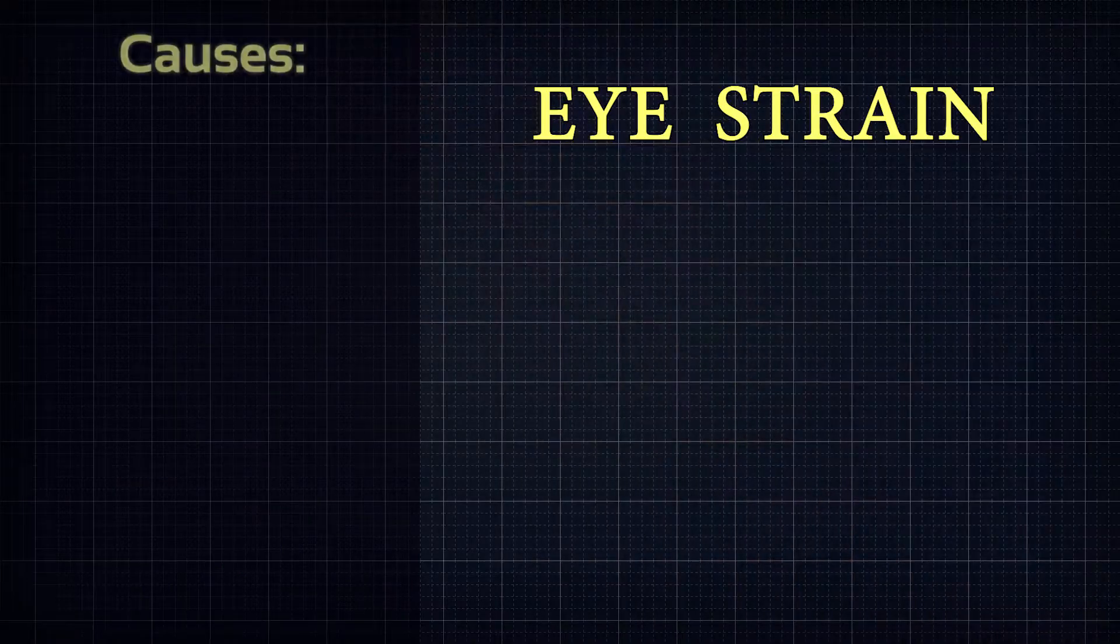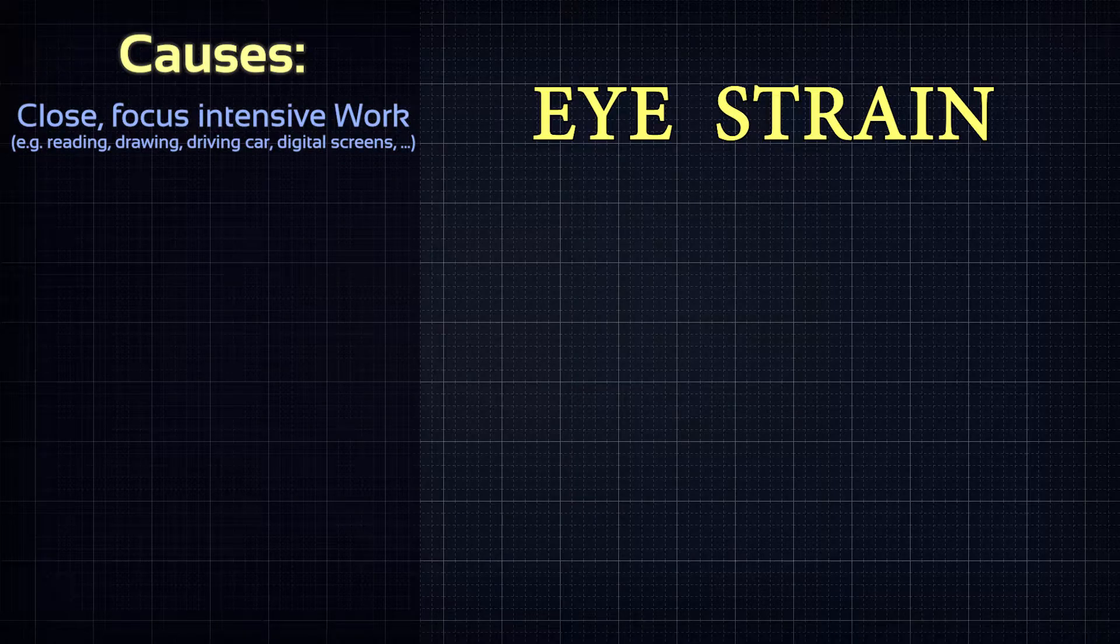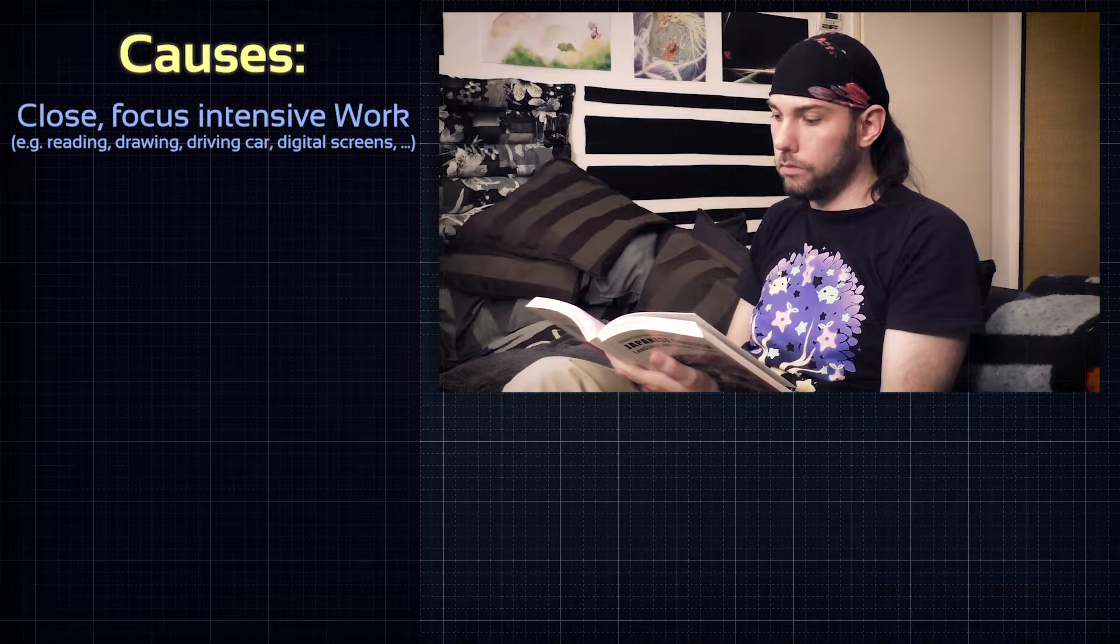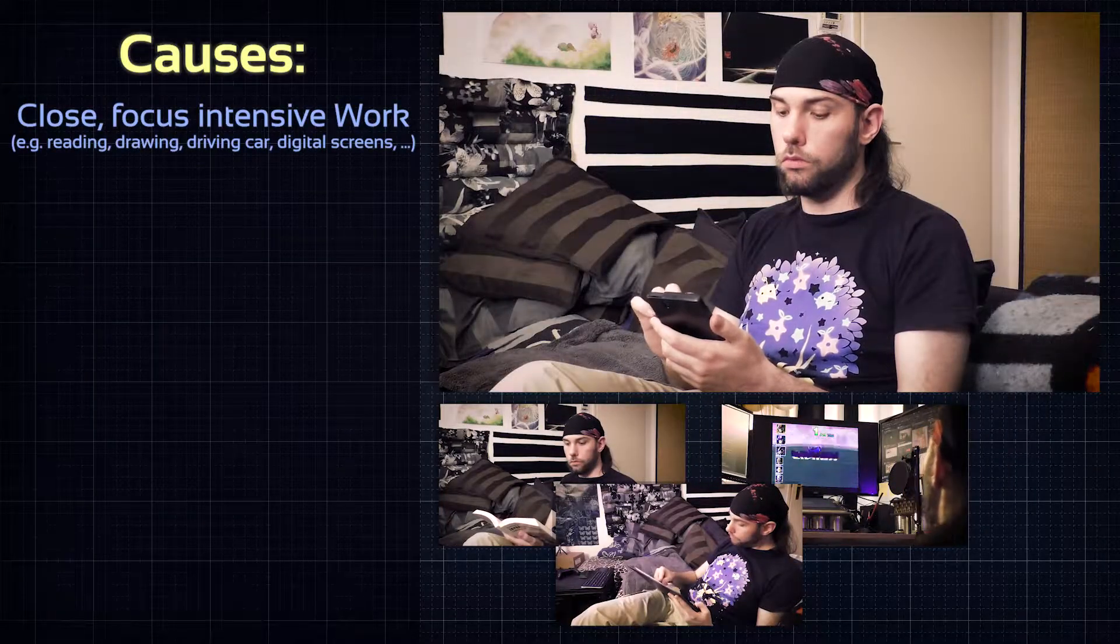Let's talk about the causes first. One of the main reasons for developing eye strain is close-distance, focus-intensive work over long periods of time. Examples of activities like this would be reading, drawing, driving a car, or looking at digital screens.